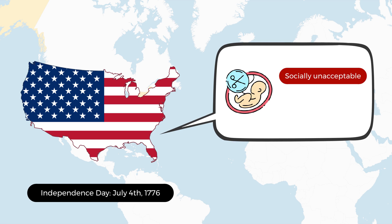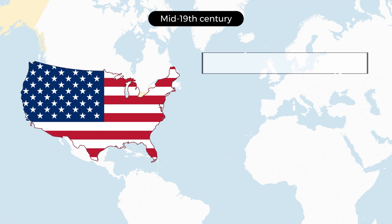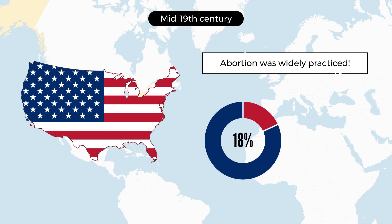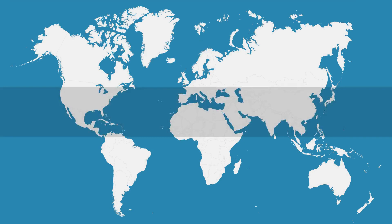In the mid-19th century, abortion was widely practiced by American women, primarily by using abortifacients, which are herbs and substances that induce abortion. By some estimates, during that period up to 35% of all pregnancies ended in abortion.